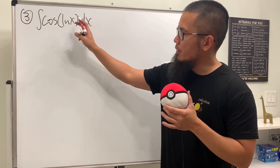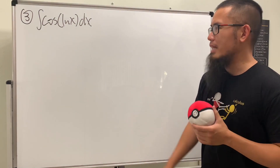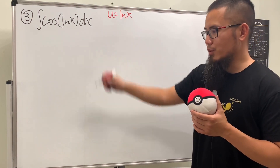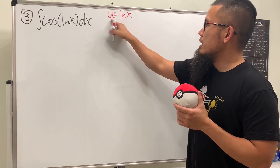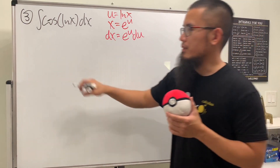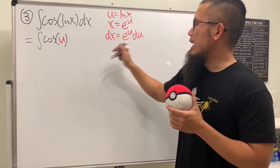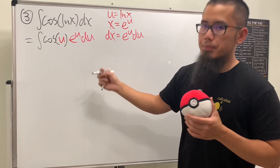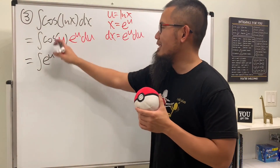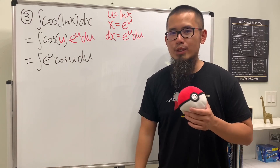For number three, we'll be integrating cosine of ln x. It looks really scary because we have ln x inside of cosine, but it's actually not so bad. If we let u equal the inside, and just put this integral to the u world, that would be the idea. So this means x is equal to e to the u — differentiate both sides and take this to the u world: integral of cosine u times e to the u du. This requires integration by parts, and it is the repeating case.